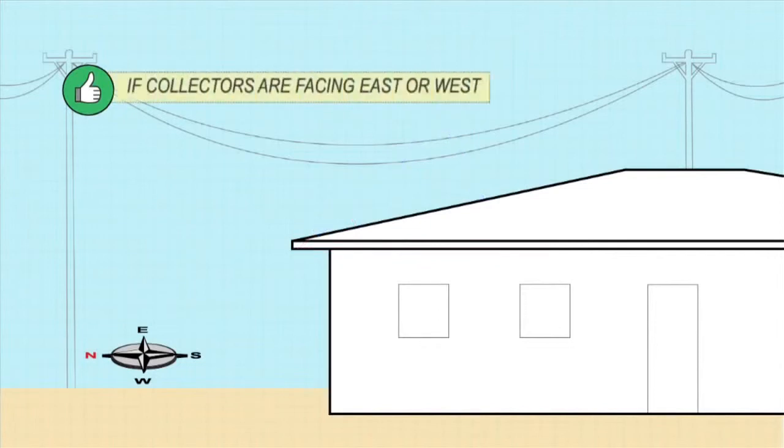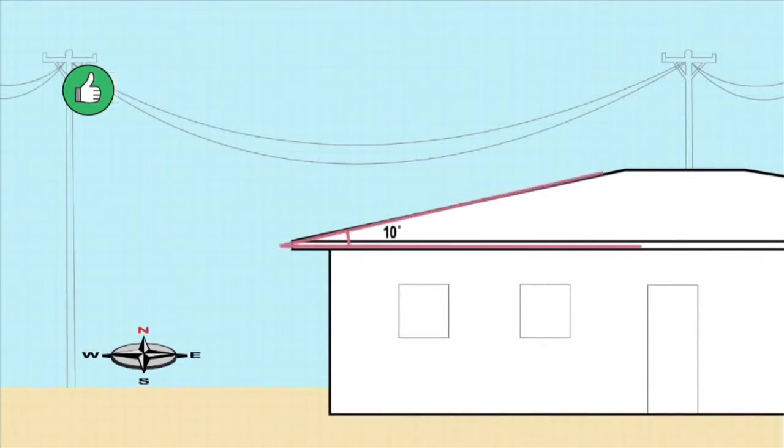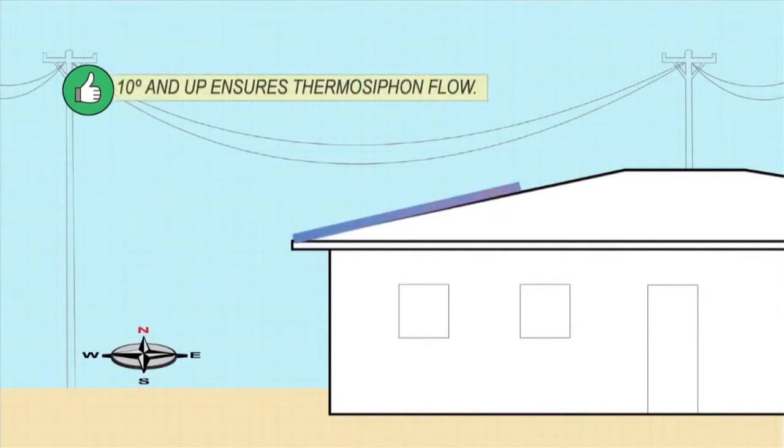If your collectors face due east or west, the lower the angle of inclination, the better. However, to allow thermosiphon flow, you must always keep the angle above 10 degrees.